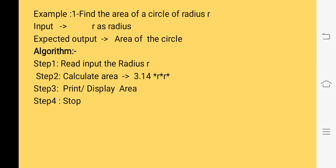In this example, we want to calculate the area of a circle with the help of radius r. First we will decide input and output for the problem. The input will be radius r. Then we will decide the output, which will be the area of the circle. Next, we will decide how we will calculate the area of the circle — we will use pi r squared.